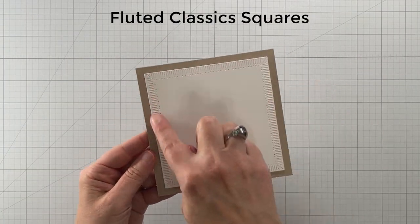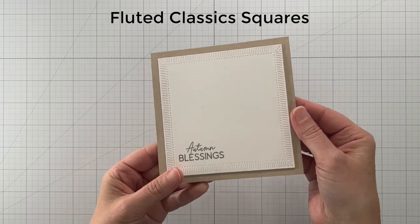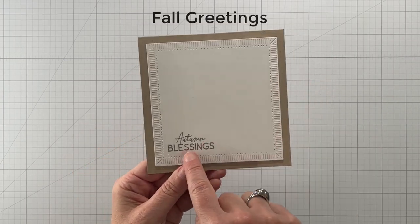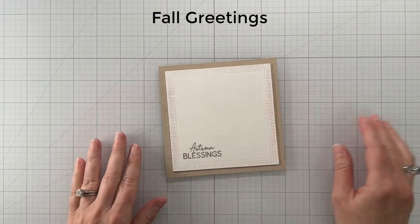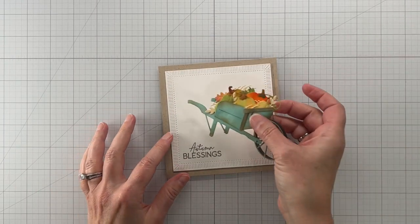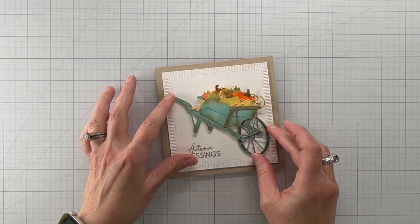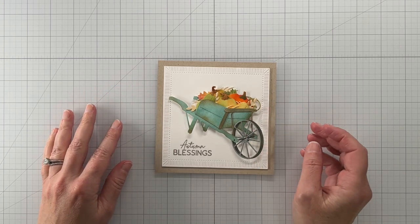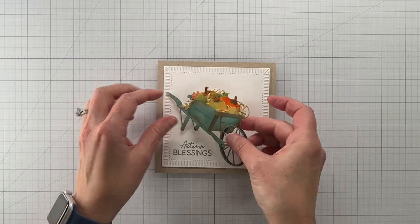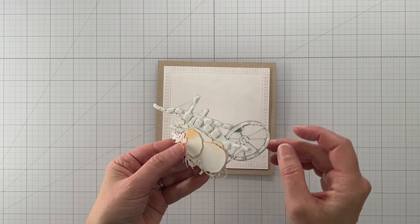All right so here's the square card. I used a fluted classic squares die to make the white panel and I used a stamp from the fall greeting stamp set - I'm not sure that stamp set is available anymore on the Spellbinders website. It seems like every time I use something it retires.